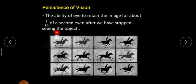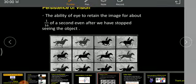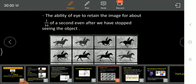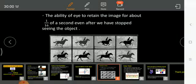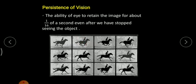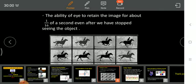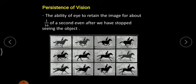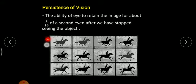Motion pictures take advantage of this concept. They capture still images — for example, horse riding images — and when they display these images at a rate of 1/24th of a second, whoever is viewing them sees the images appearing to move. They play the pictures with a time duration of 1/24th of a second, and the image appears to move. This is a perfect example of persistence of vision.